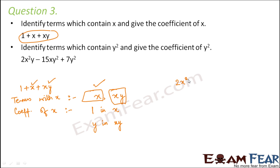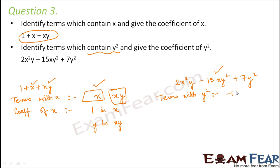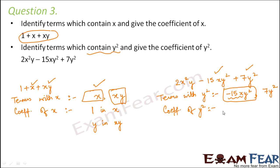In the expression 2x squared y minus 15xy squared plus 7y squared, we find the terms which contain y squared. The first term has y but not y squared. The second term, minus 15xy squared, contains y squared, and so does the third term, 7y squared. The coefficient of y squared in minus 15xy squared is minus 15x, and in 7y squared it is 7.